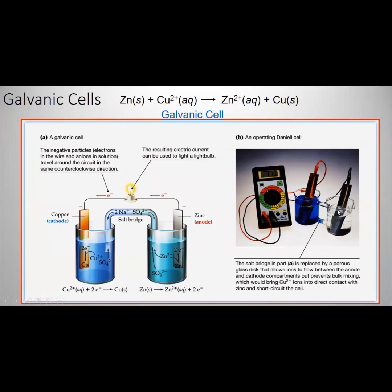You have a zinc metal, which is the electrode for this compartment, and you have the copper electrode for this compartment. Then you connect them through crocodile wires. These crocodile wires are connected to an avometer, which is a device to measure the change in current, resistance, and potential.